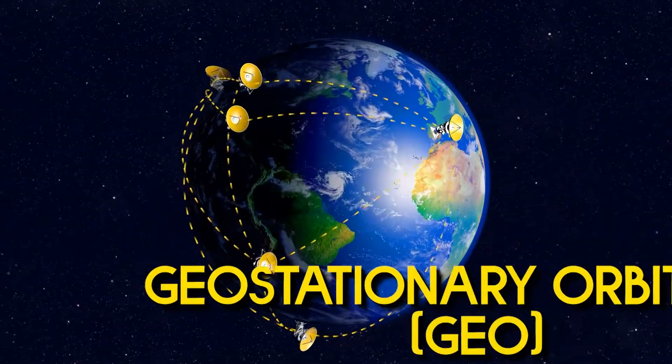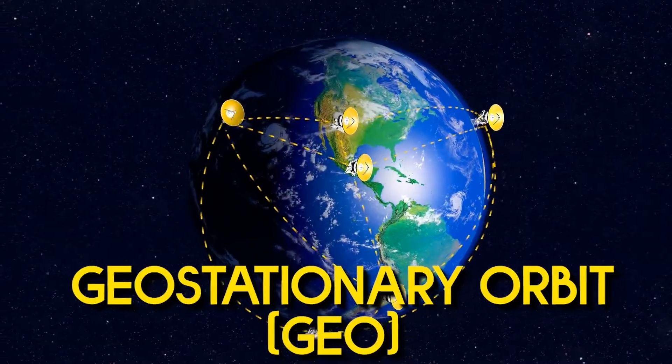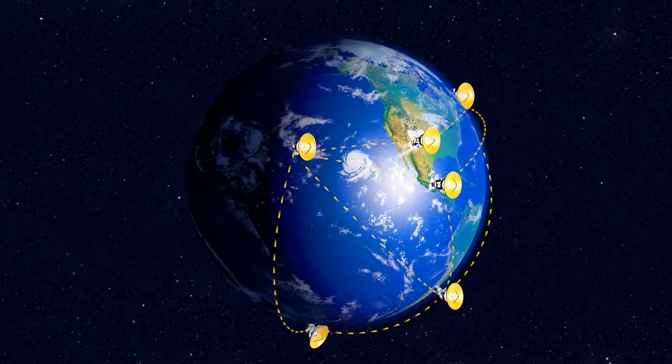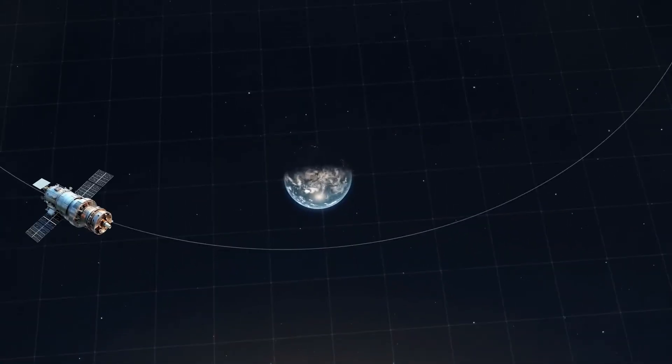Next, there's Geostationary Orbit, or GEO, which causes the satellite to remain in a fixed position relative to Earth's spin, ideal for communication and weather monitoring.